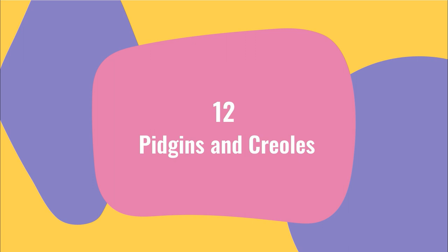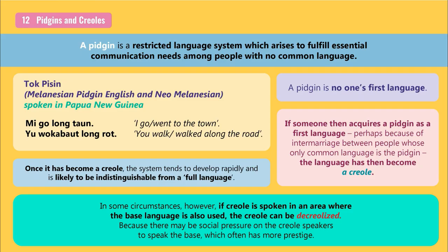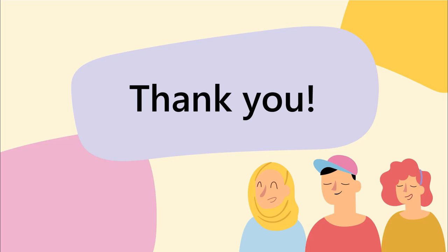Adopting a lingua franca is not the only solution. In some cases a pidgin develops. A pidgin is a restricted language system which arises to fulfill essential communication needs among people with no common language. It is no one's first language and has no native speakers. If someone acquires a pidgin as a first language — perhaps due to intermarriage between people whose only common language is the pidgin — the language has then become a creole. Once it becomes a creole, the system tends to develop rapidly and may be indistinguishable from a full language. However, if a creole is spoken in an area where the base language is also used, the creole can become decreolized due to social pressure on creole speakers to adopt the more prestigious base language.